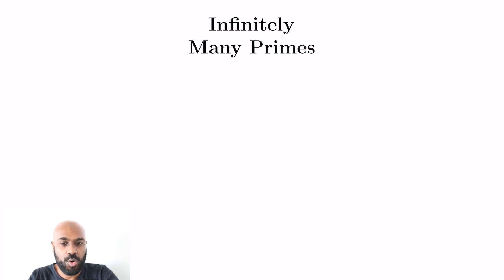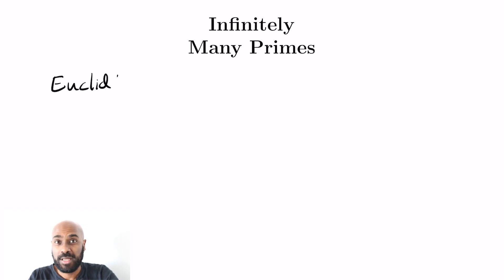Today I want to talk about the fact that there are an infinite number of prime numbers and how I don't really like Euclid's classic proof of this. So we're going to go over Euclid's proof and then I'm going to talk about two proofs that I actually like better. I especially like the last one.